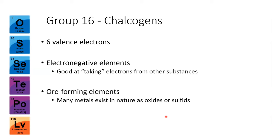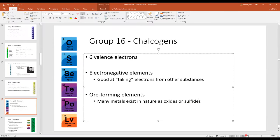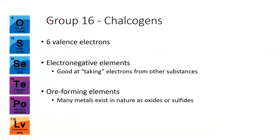Group 16 — the chalcogens — is the oxygen family. Oxygen and sulfur are at the top. When we find metals in nature, they're often not pure — you'd have copper oxide or copper sulfide rather than pure copper. Oxygen in particular is very good at taking electrons from other atoms. That electronegativity is something we'll discuss in Chapter 6.